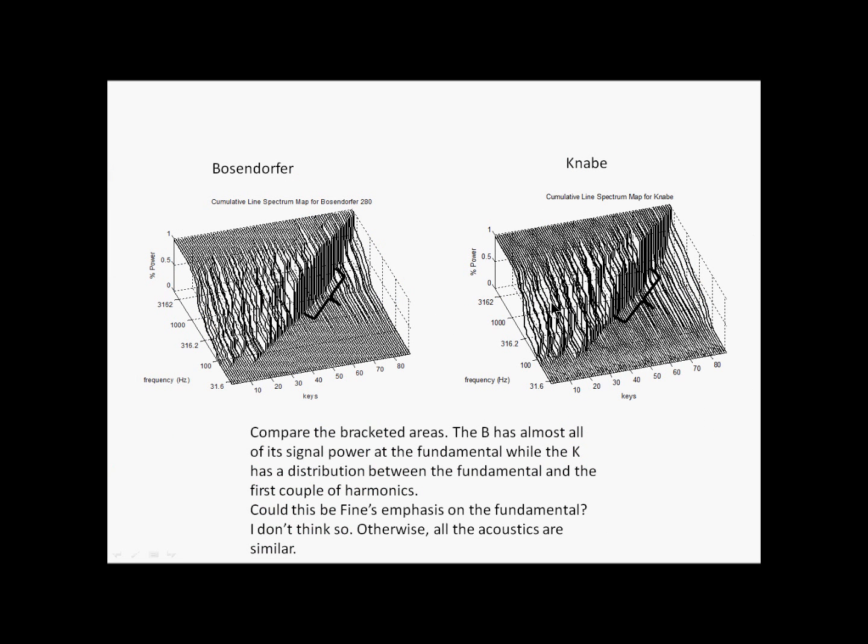This is an area that perhaps you might argue emphasizes the fundamental over the harmonics. Here's the Bosendorfer. You can see in this particular range here we start at the fundamental and we come almost all the way up. Almost all the power is in the fundamental. Over here we start at the fundamental and we come up and we have some steps through some harmonics. So this is the only place I can see where you might argue that the fundamental is emphasized for the European pianos.